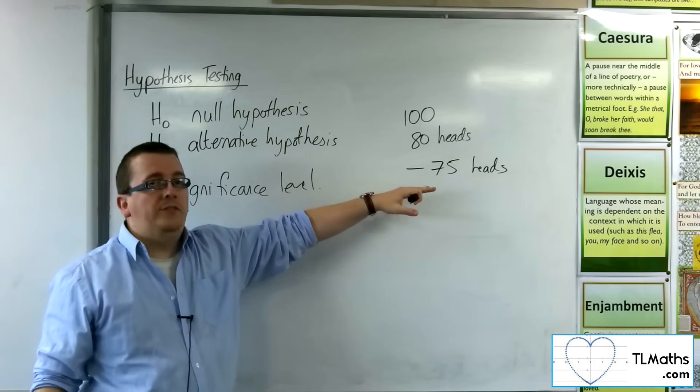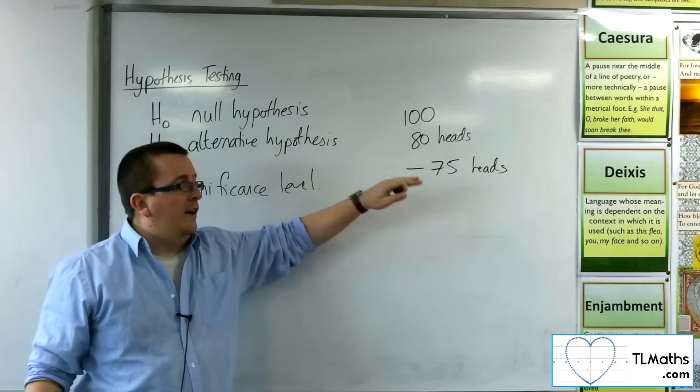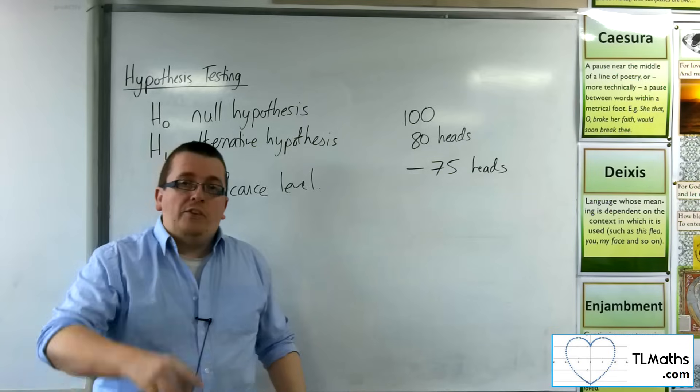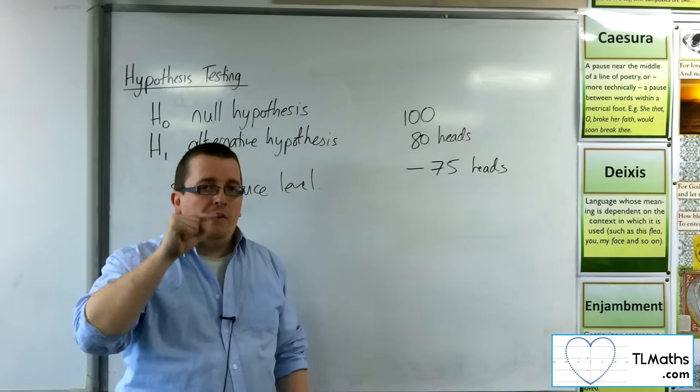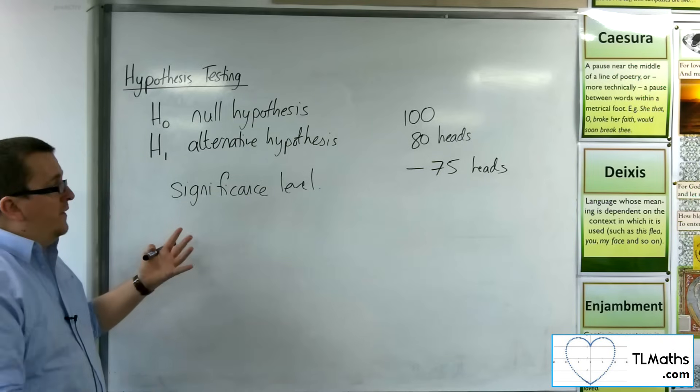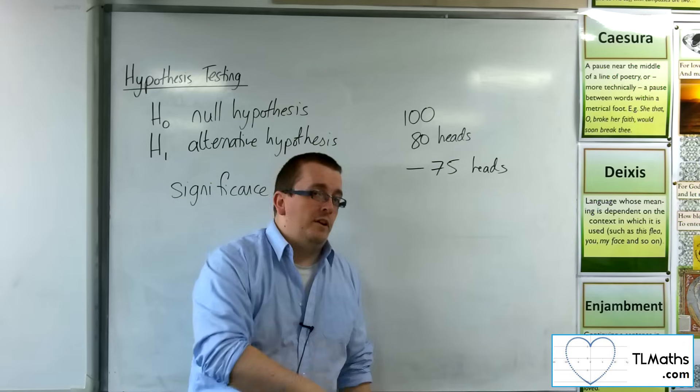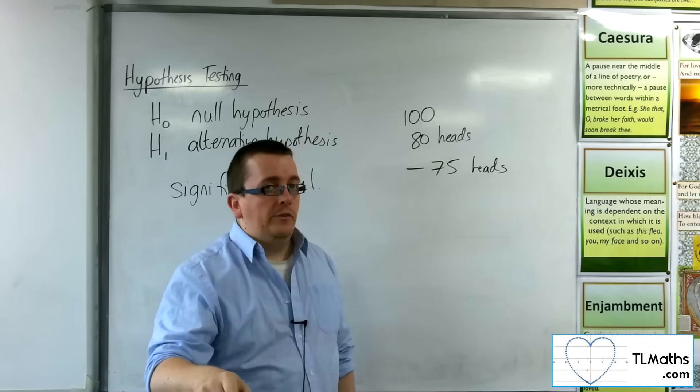And I get 80 heads. Now, that doesn't mean, that still doesn't mean that the coin is biased. That's the important thing. It doesn't mean that the coin is definitely biased. It means that you have evidence to suggest that the coin could be biased towards heads.